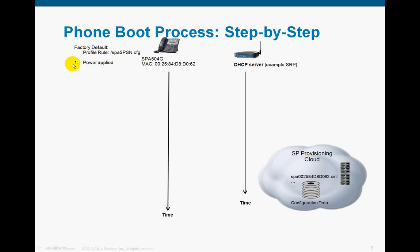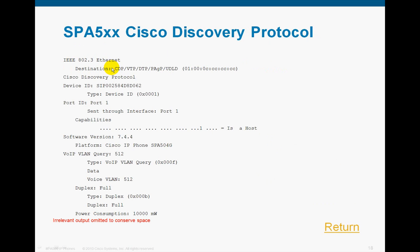Step one: power is applied, the power-on self-test runs, and then the phone performs a Cisco Discovery Protocol. This is actual output from a Wireshark trace showing what the Cisco Discovery Protocol looks like — it shows the phone's software version, the phone's model number, and the VLAN that the phone is querying on.